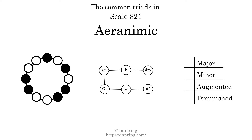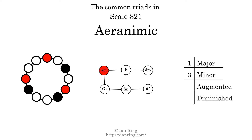Here are the common triads present in this scale. The diagram in the center is a graph of parsimonious voice leading between triads. There is one major triad, three minor triads, one augmented triad, and one diminished triad. Here is a Hamiltonian path of parsimonious voice leading that uses all the triads.